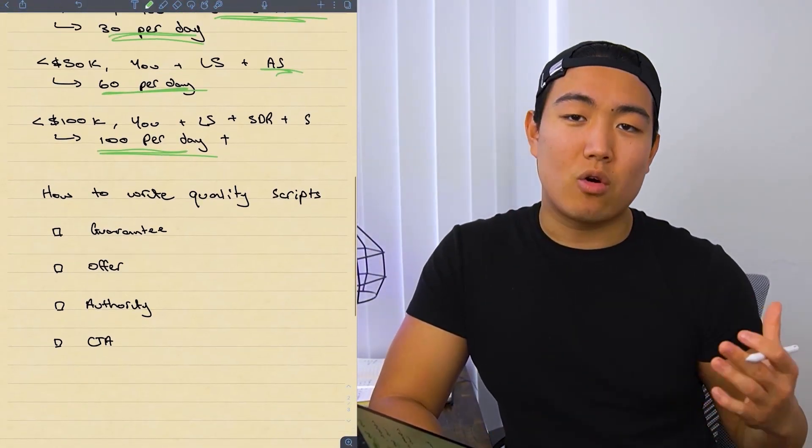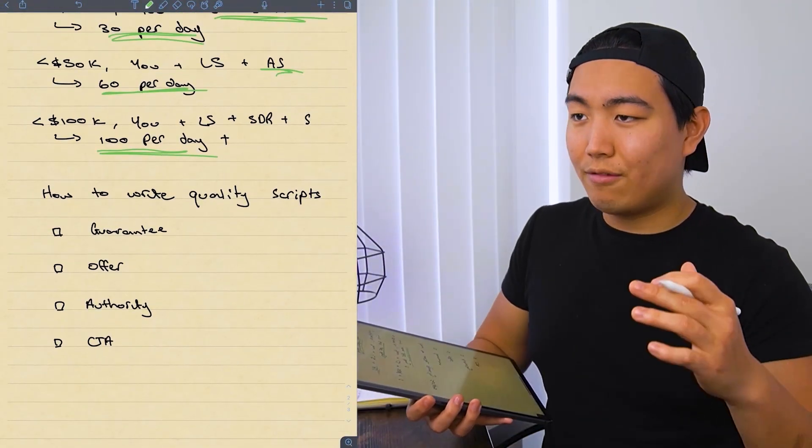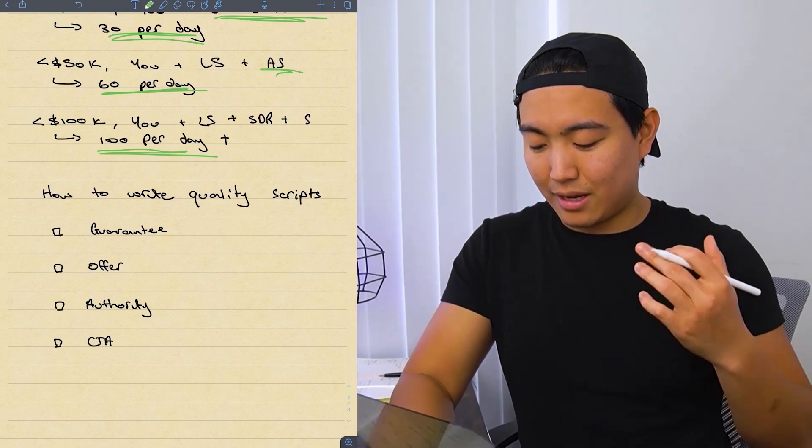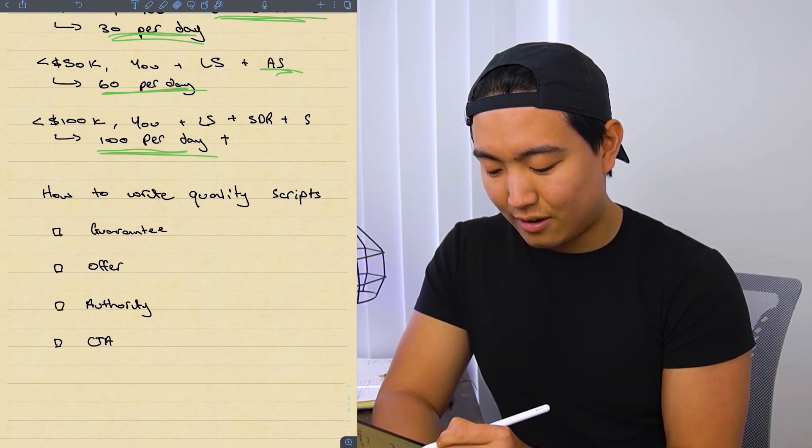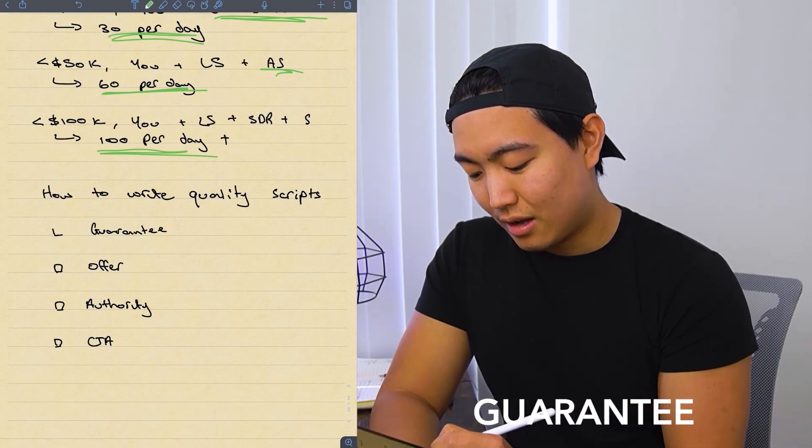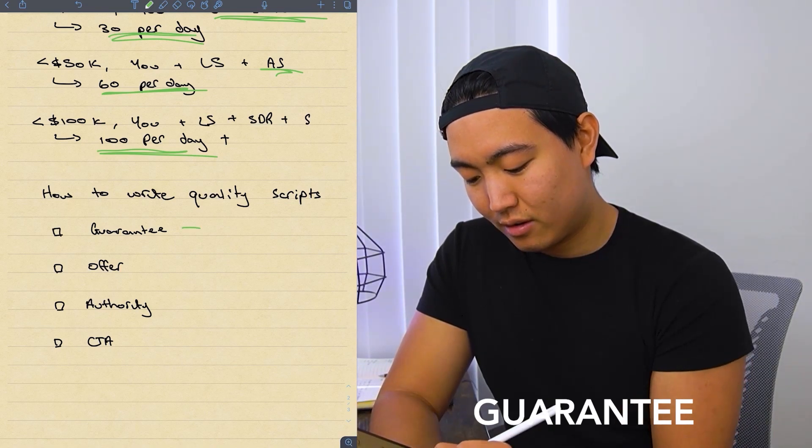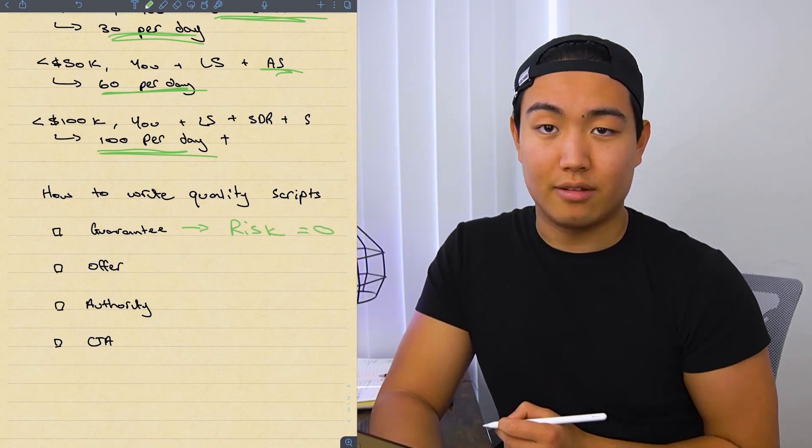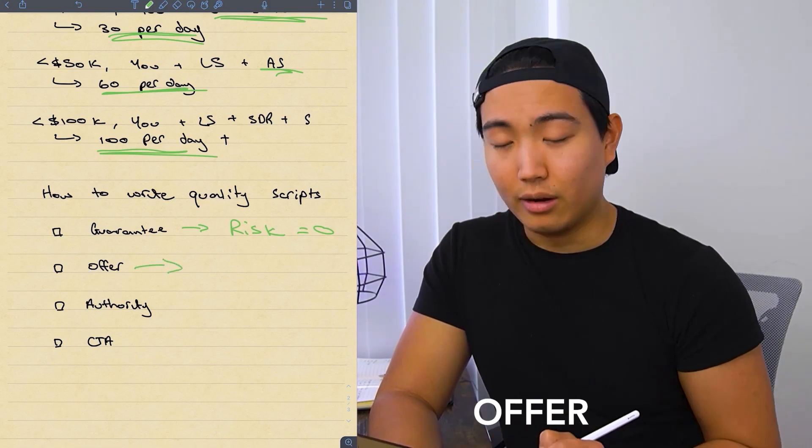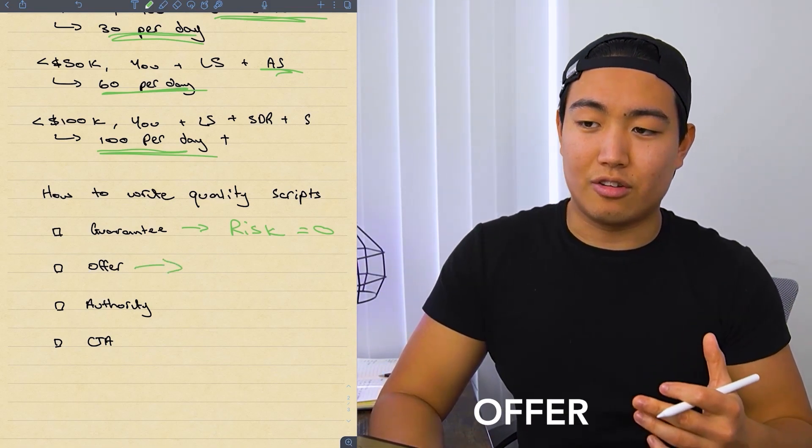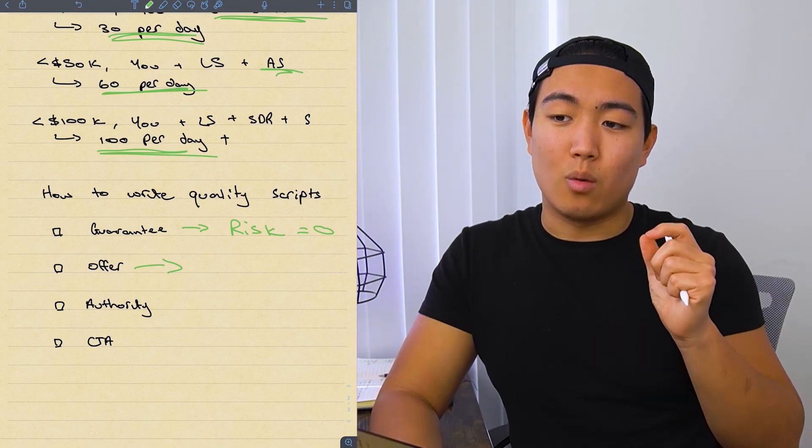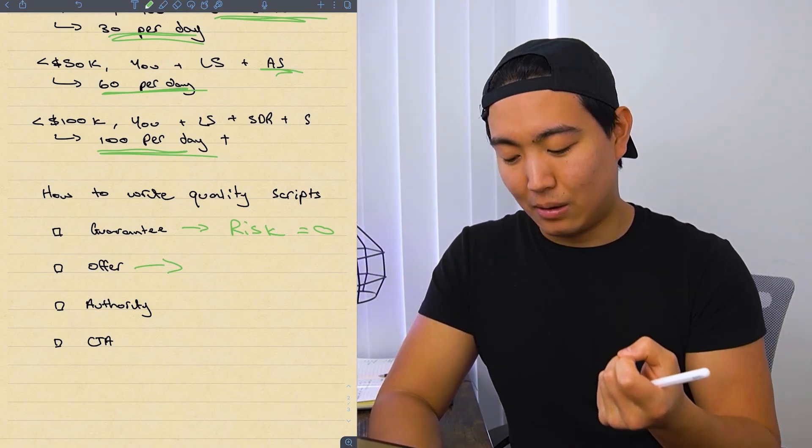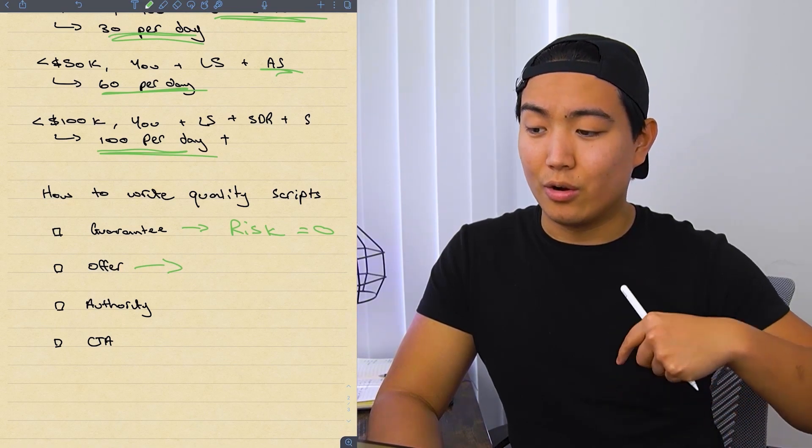Next, how do you actually write quality scripts? Well, to kind of dump this down for you guys, to make it super easy to understand, there's four things you need in every good script. And that's basically you need to have a guarantee, which is just making it risk-free for potential clients to onboard. You need to have a really solid offer. So basically your offer just needs to be a desired outcome plus a way of getting them that kind of stands out a little bit. And also implying who else have you helped...